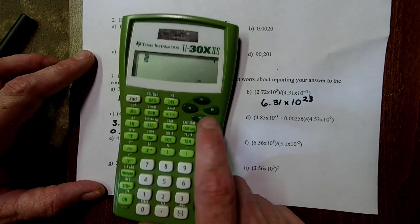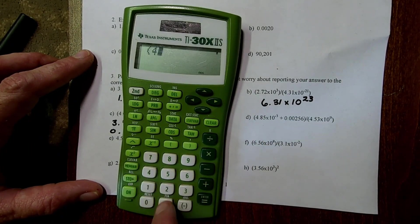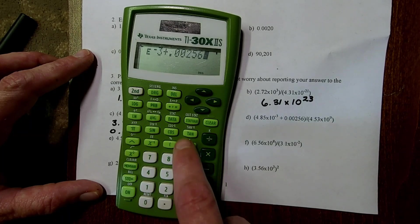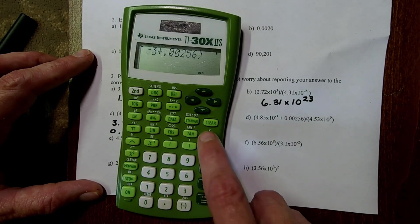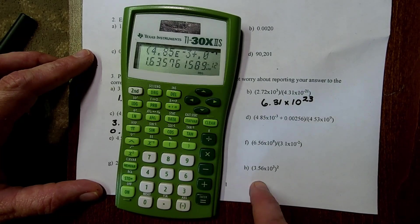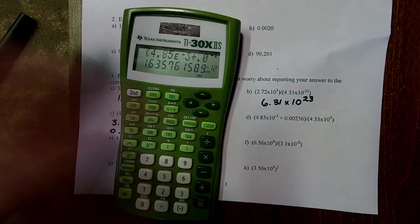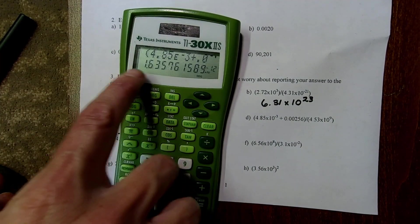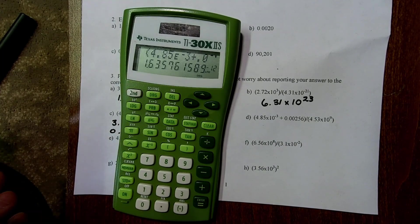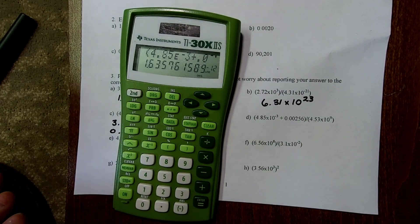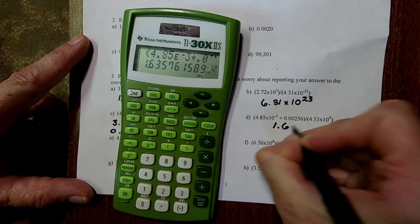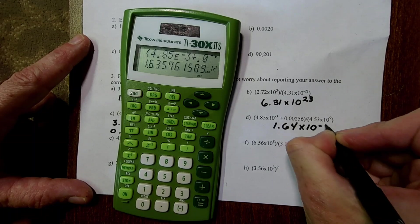So, I'm going to put parentheses around my numbers in the top. So, I have 4.85E to the negative 3 plus .00256, close the parentheses, and then I hit divide, and then I have 4.53 2nd E to the ninth. And my answer here, so right now, this is an awesome example. Right now, I'm not in scientific notation. There's no SCI popped up there. But, my answer was given to me in scientific notation because it's such a small number, and the calculator can't write out all those zeros. There's just not enough space.